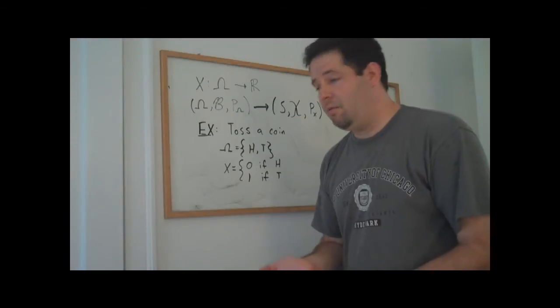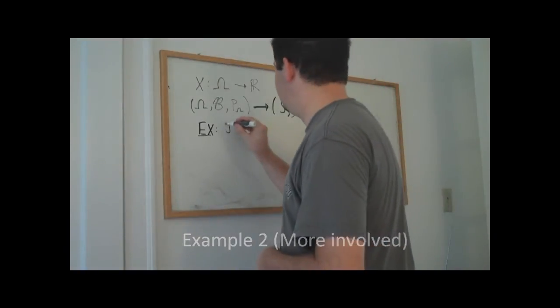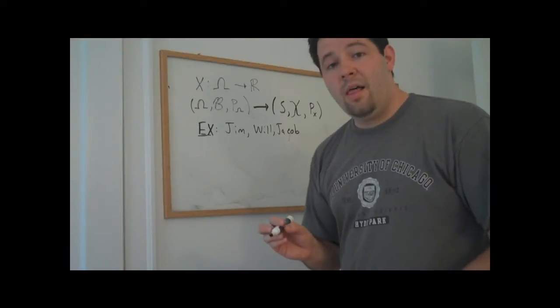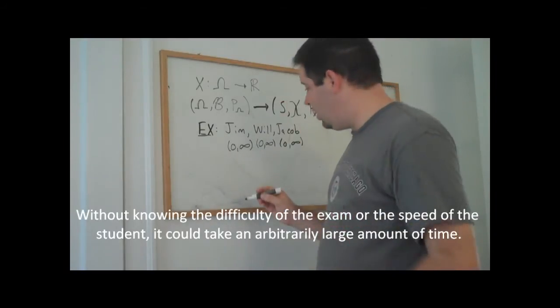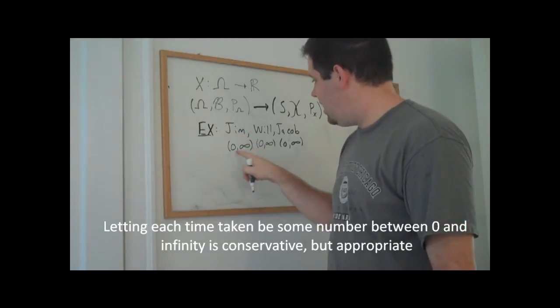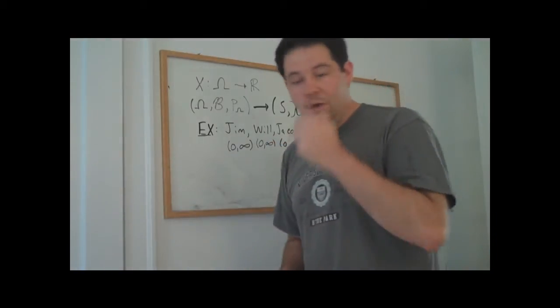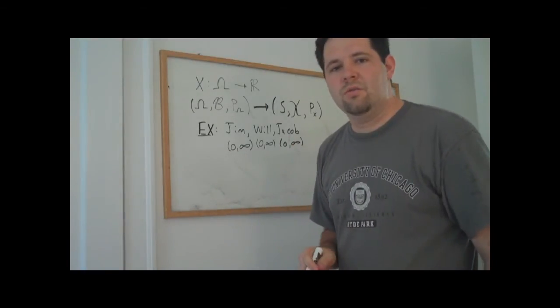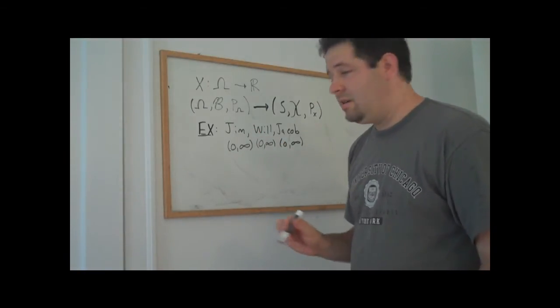Suppose that we have three people who take a test, and we observe the three people, the names of these three people, as well as the amount of time that each of them takes on this exam. And so what our sample space would be, would be pairs of names, so Jim and the amount of time Jim took, Will, the amount of time Will took, and Jacob, the amount of time that Jacob took. And that's going to be the Cartesian product between these three. The names and this interval from zero to infinity is going to be our sample space.